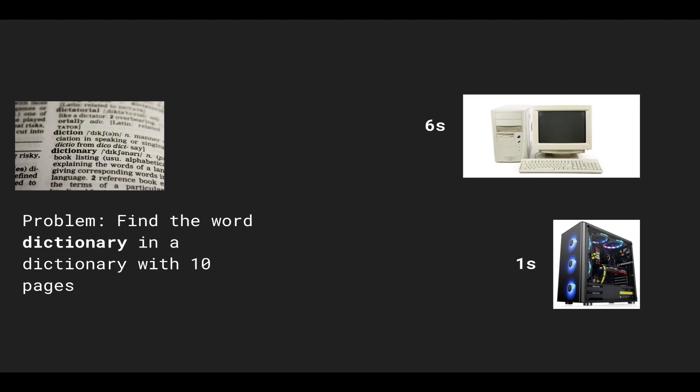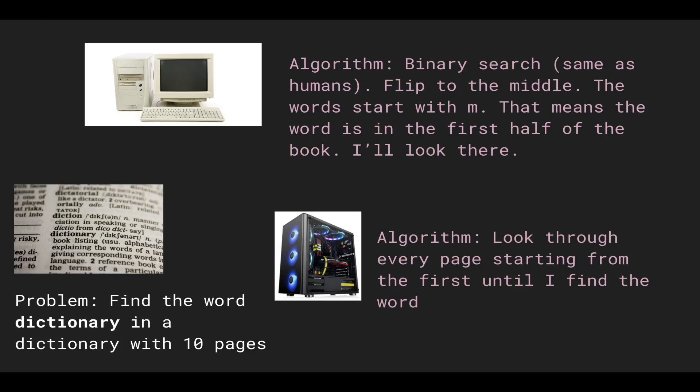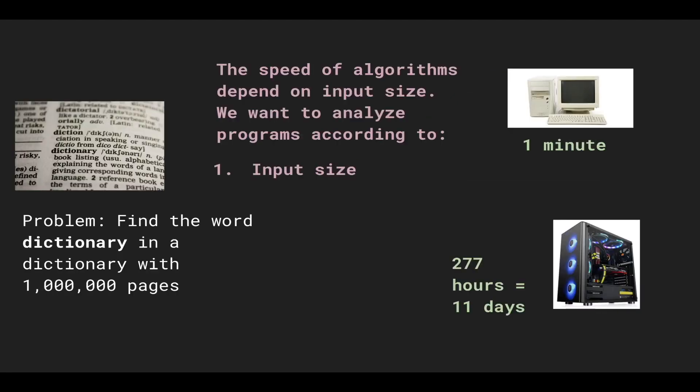Does that mean the gaming computer's algorithm is better? Intuitively, no — we're not going to look through every single page. Consider a dictionary with a million pages: the slow computer's algorithm takes one minute, whereas the gaming computer takes around 11 days. With scale, when the input size grows toward infinity, the slow computer's algorithm is quicker, because the gaming computer must go through up to a million pages whereas the slow computer cuts the search space in half each time.